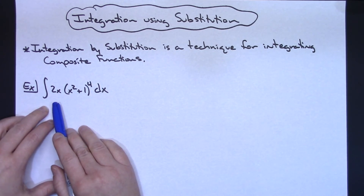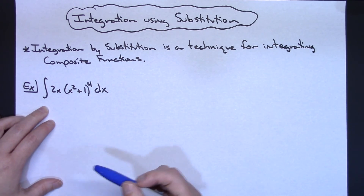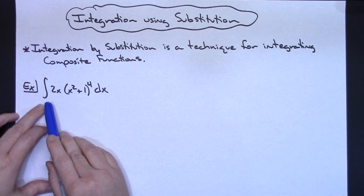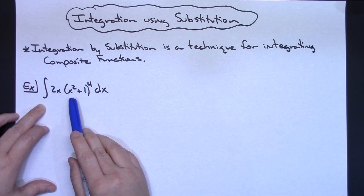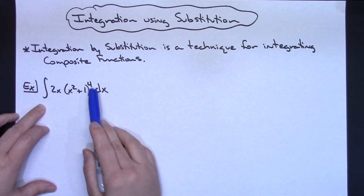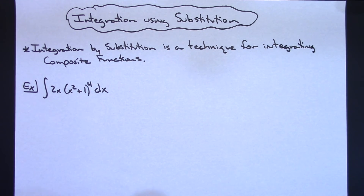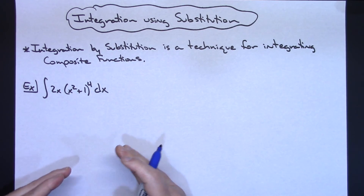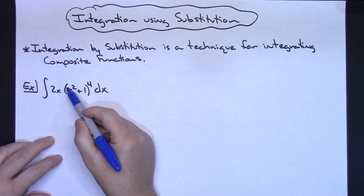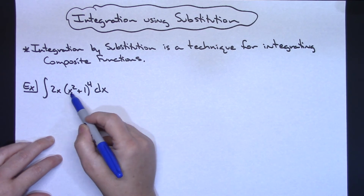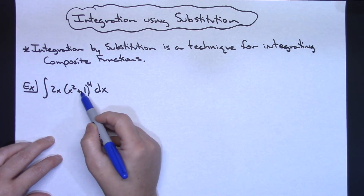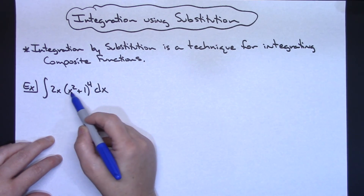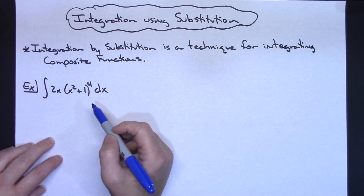For my first example, we'll go through about three examples in this video. Let's say we're integrating 2x times the quantity x squared plus 1 raised to the fourth power dx. Now what I'm going to want to do is look for the part of the function that is the composite function. Right in here I've got an inside function and then I've got an x to the fourth that would be the outside — a power to the fourth and an inside function of x squared plus 1.